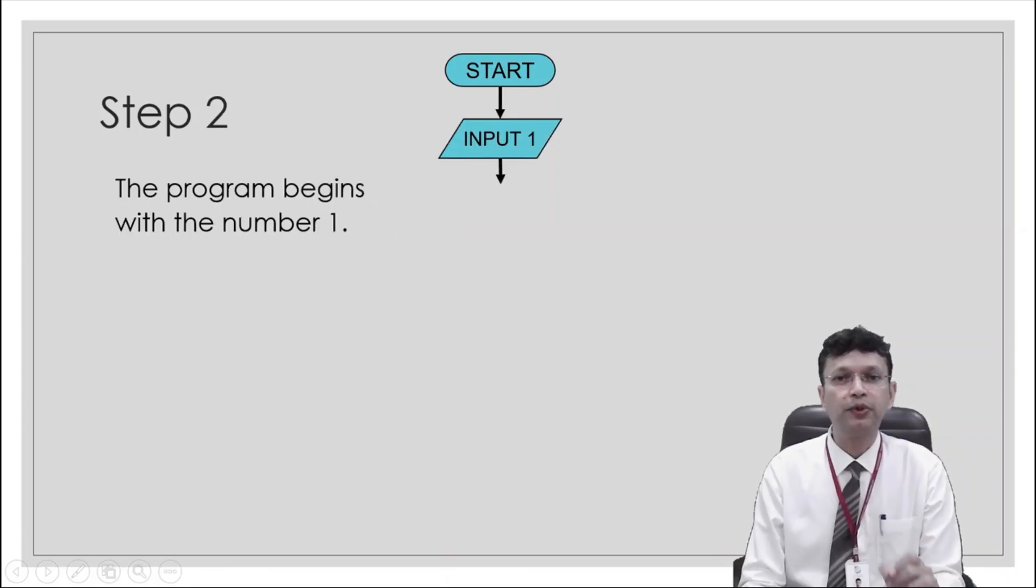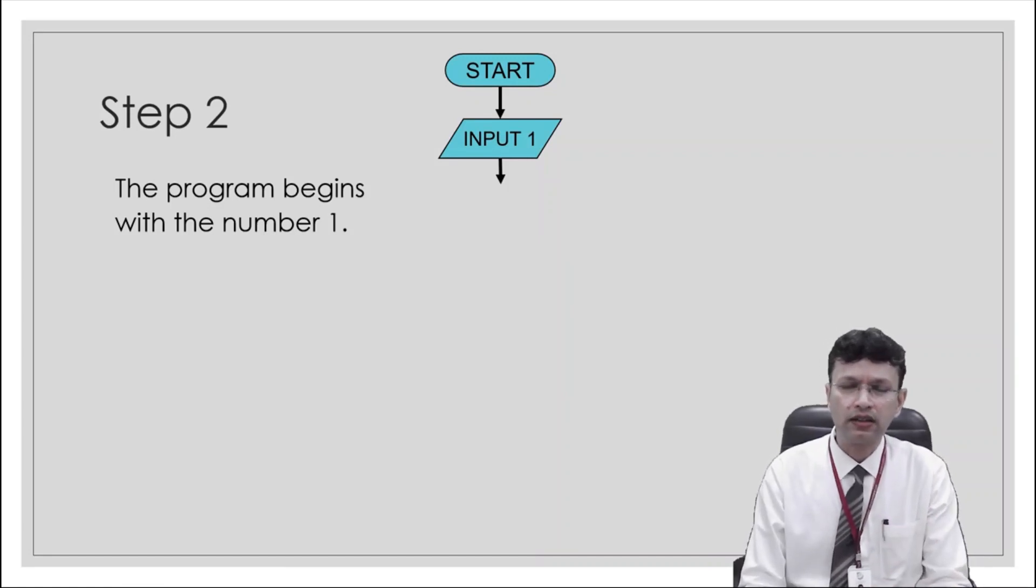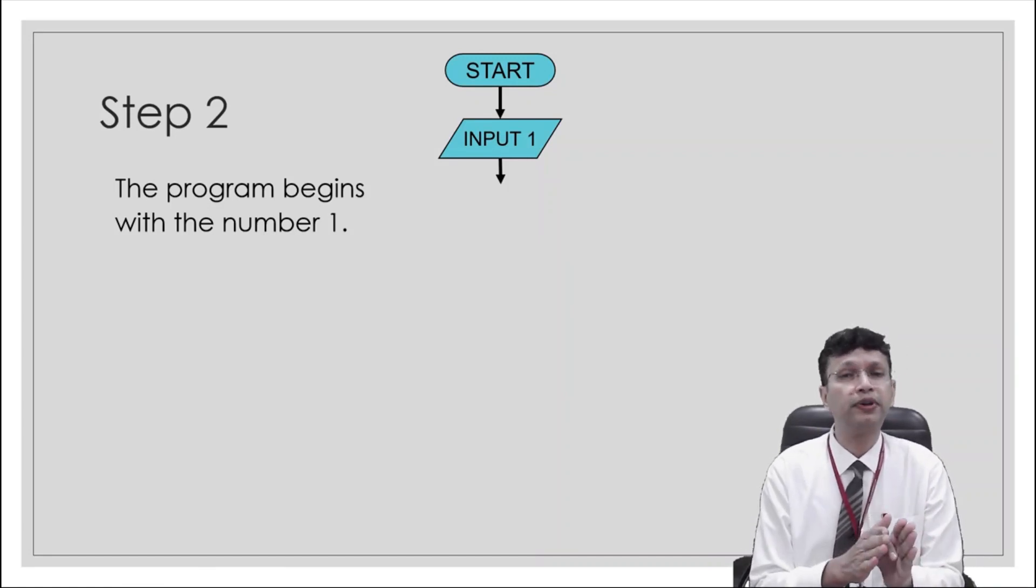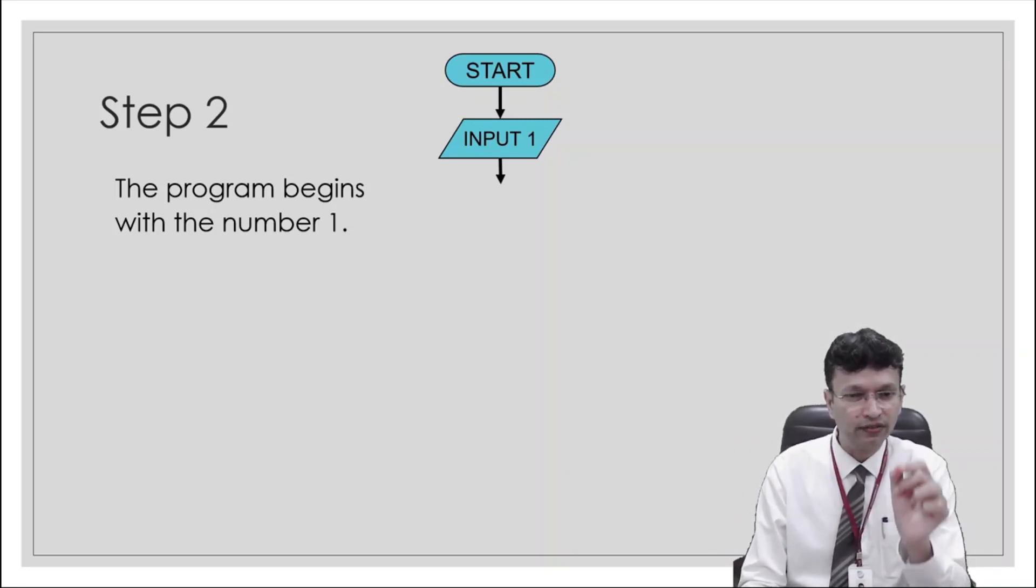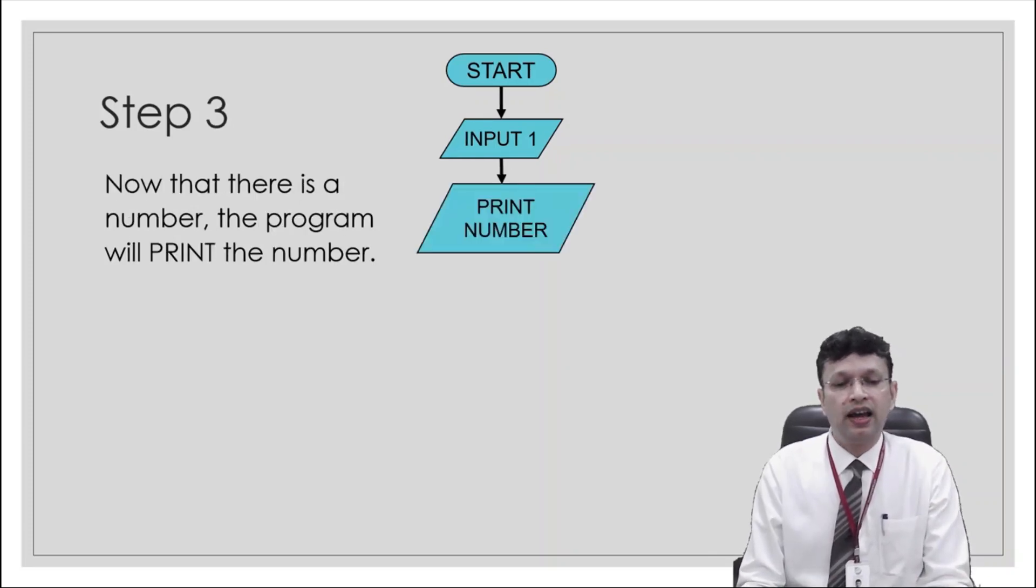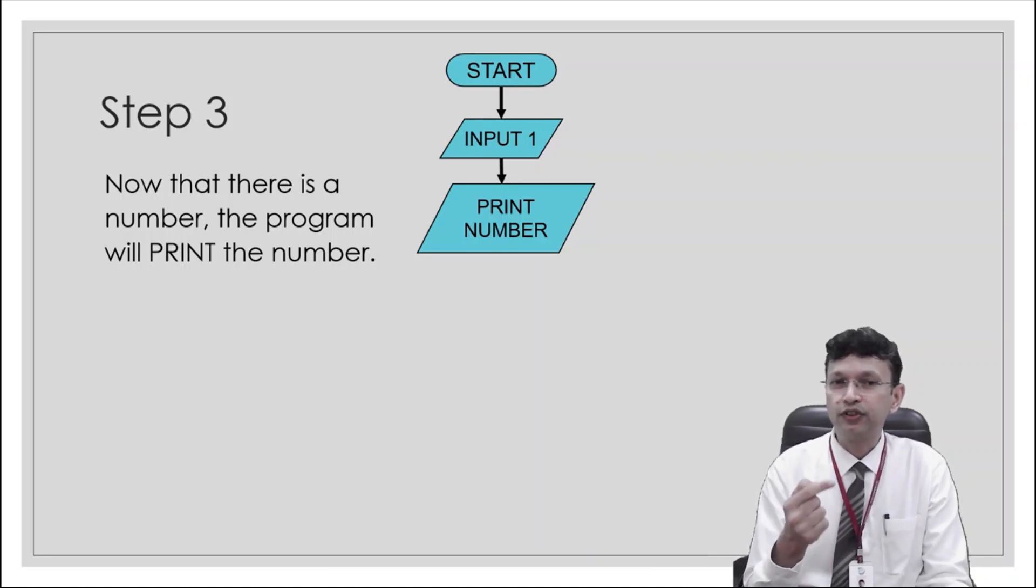And thereafter, we'll have input because we have to give a starting value, initial value. So let's start the program from 1 because we have to print from 1 to 9. The program begins with the number 1. We have used the connector. As you can see, the arrows are there. And then finally, print the number. So now because it is running for the first time, we'll be printed 1. So 1 will be printed.